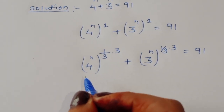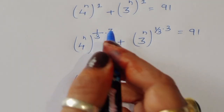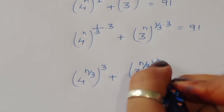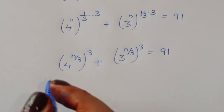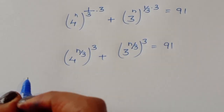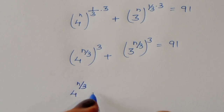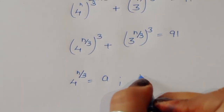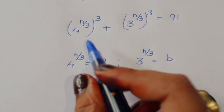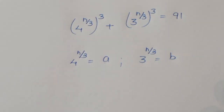We can write this as 4 power n upon 3, to the power 3, plus 3 power n upon 3, to the power 3, is equal to 91. To make this easier, let's consider 4 power (n/3) is equal to a, and 3 power (n/3) is equal to b. So the first term becomes a cube and the second term becomes b cube.